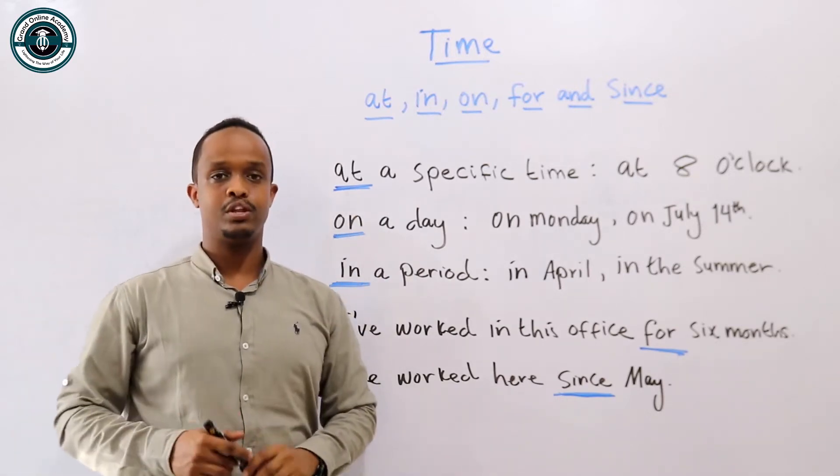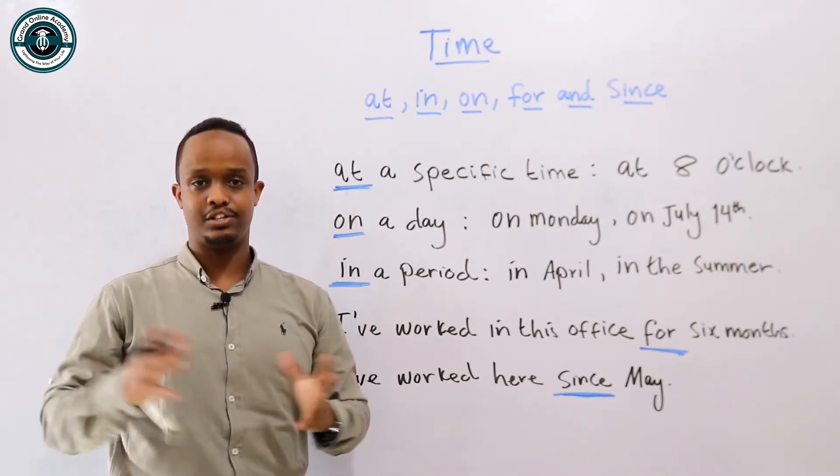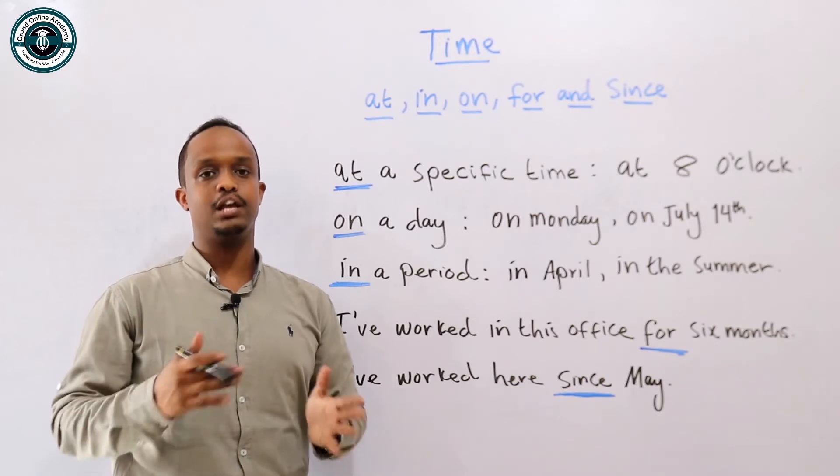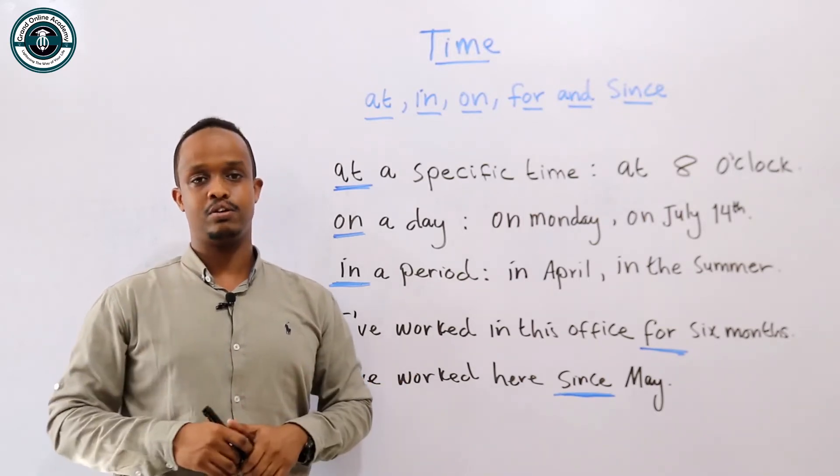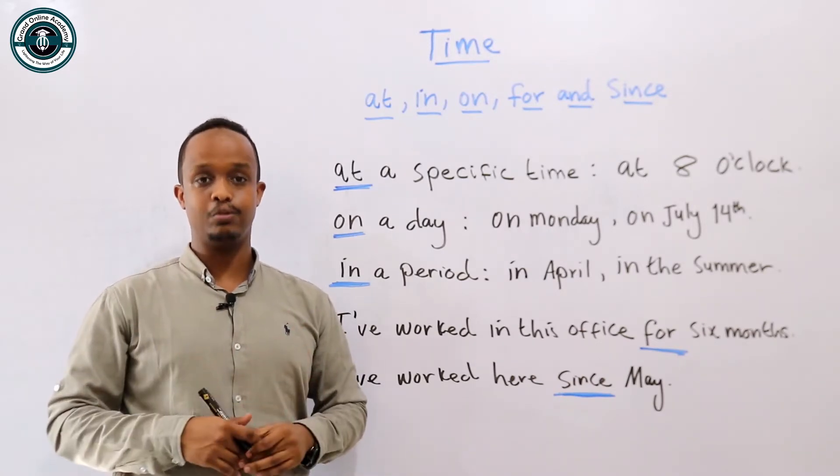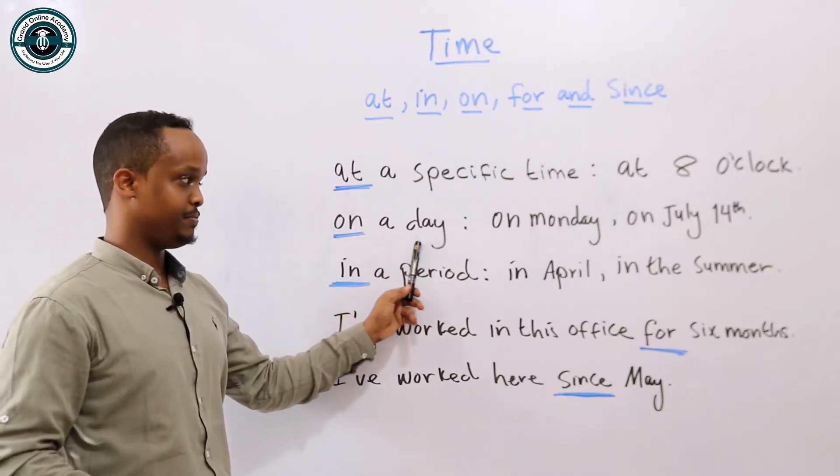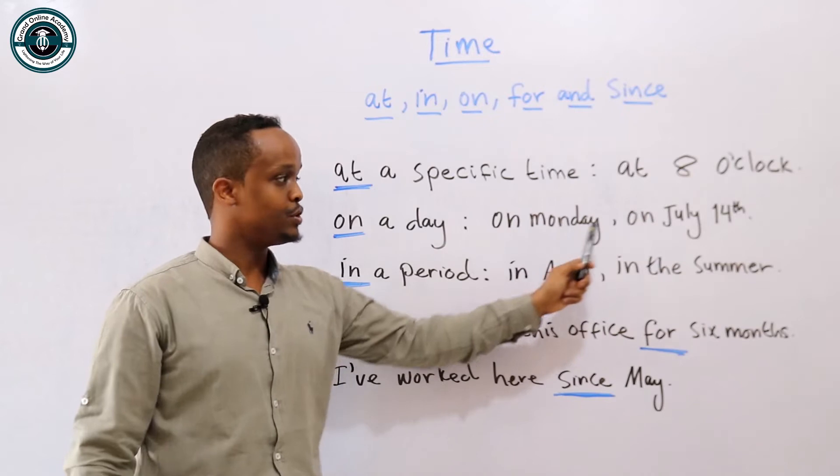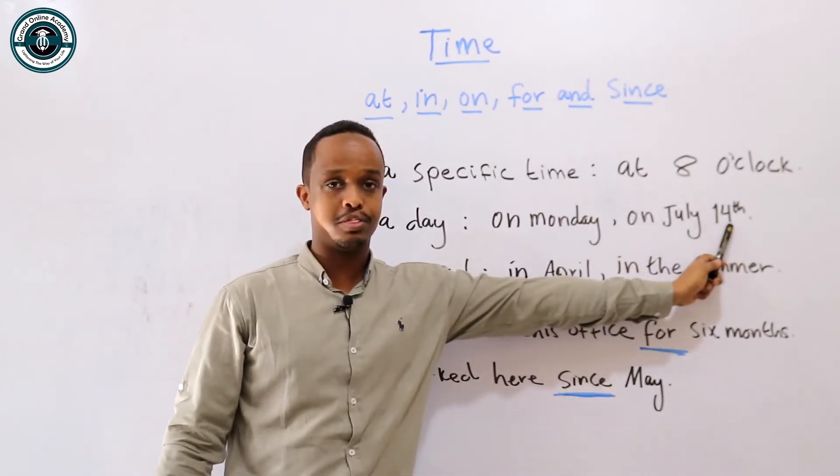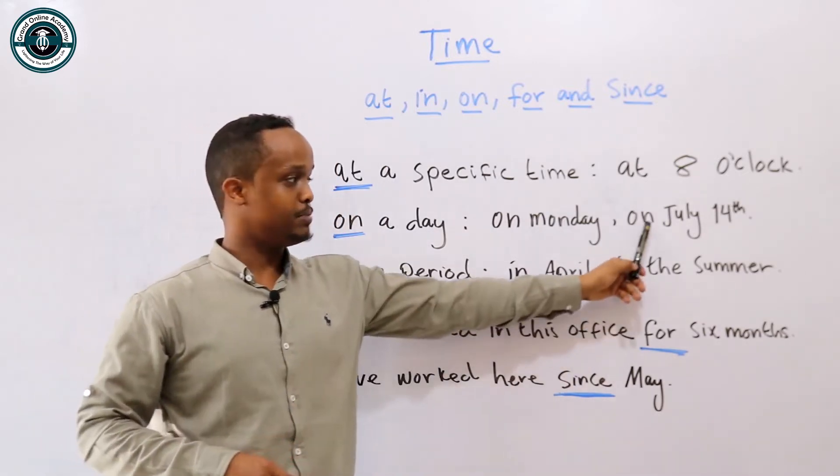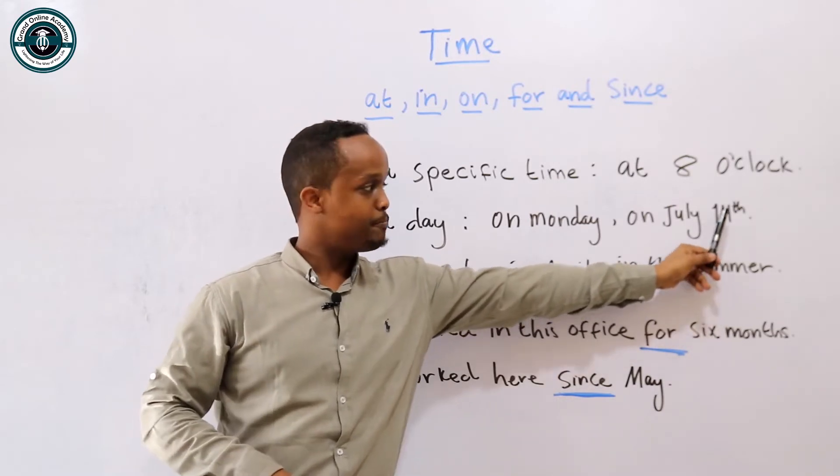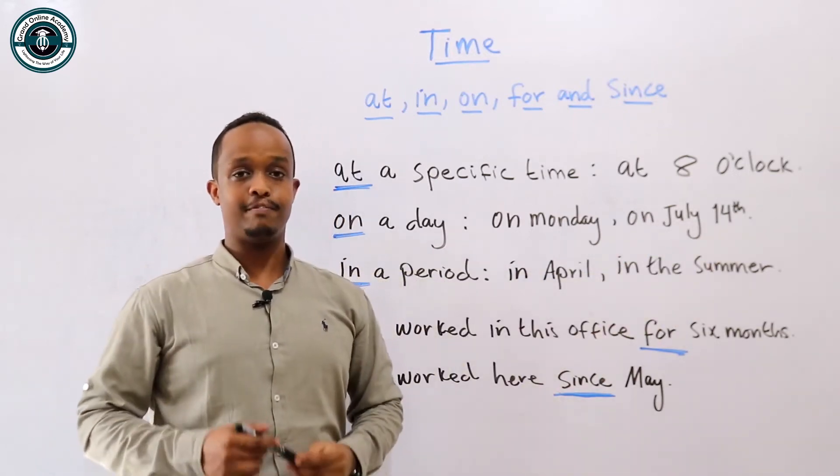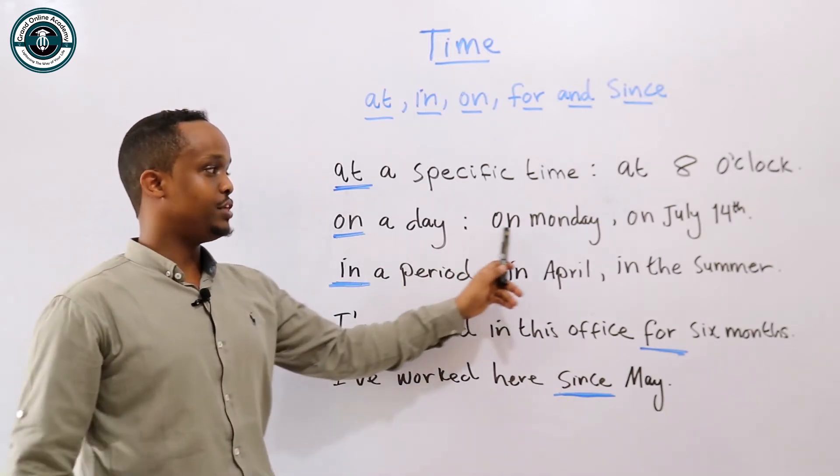On is used for days, for dates, days of the week. On is used for a day: on Monday. Monday is a day. On July 14th - that's also a date. Make sure that you pronounce the sound: on July 14th. I think you understand that.